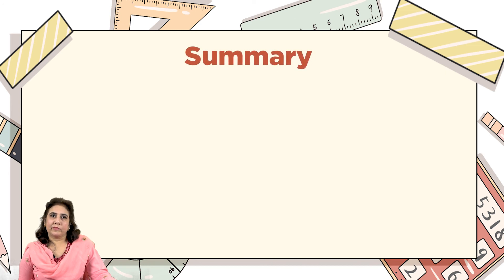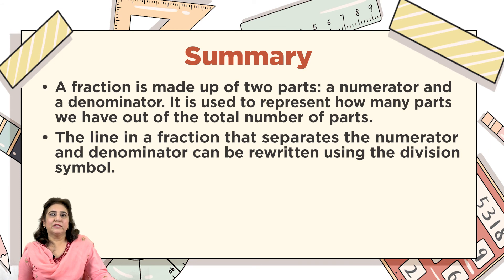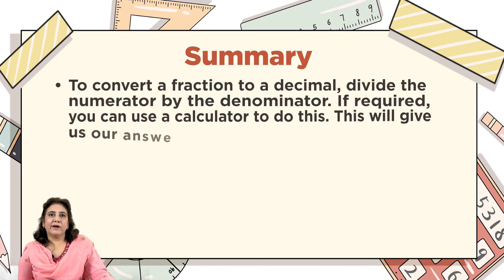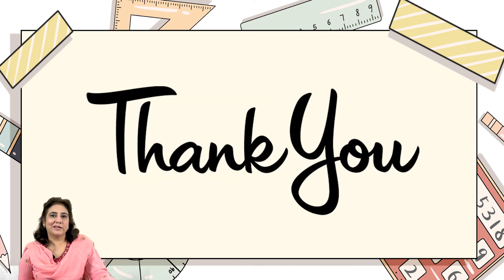Summary: A fraction is made up of two parts — a numerator and a denominator — and represents how many parts we have out of the total number of parts. The line separating them can be rewritten as a division symbol. To convert a fraction to a decimal, divide the numerator by the denominator; you can use a calculator if needed. For example, 4/5 as a decimal is four divided by five, which equals 0.8. Hope you learned the concept — goodbye, see you next time!